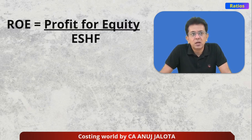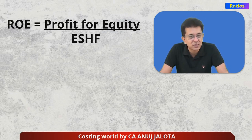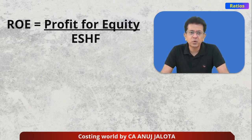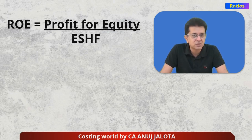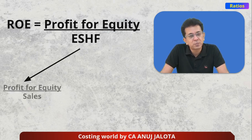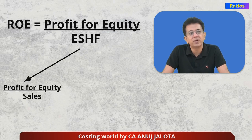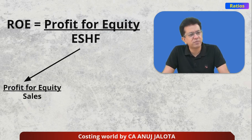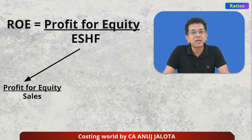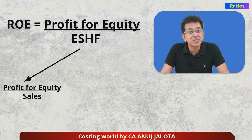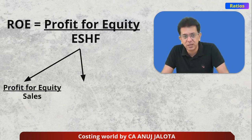ROE is nothing but profit for equity divided by equity shareholders' funds. We try to break this up into many parts. The first part is basically the Net Profit Ratio — profit for equity upon sales, where profit for equity means PAT minus preference dividend. So ROE depends upon the margin you're going to get whenever you sell your goods.